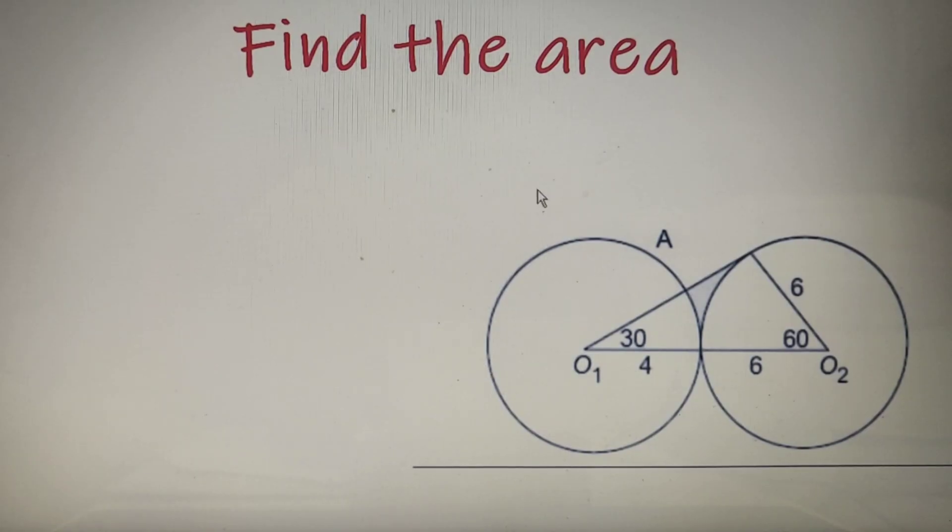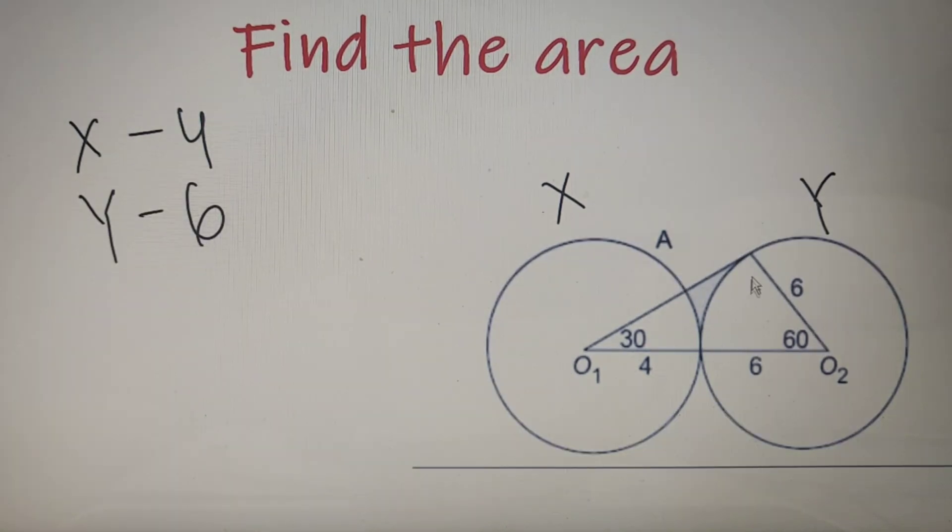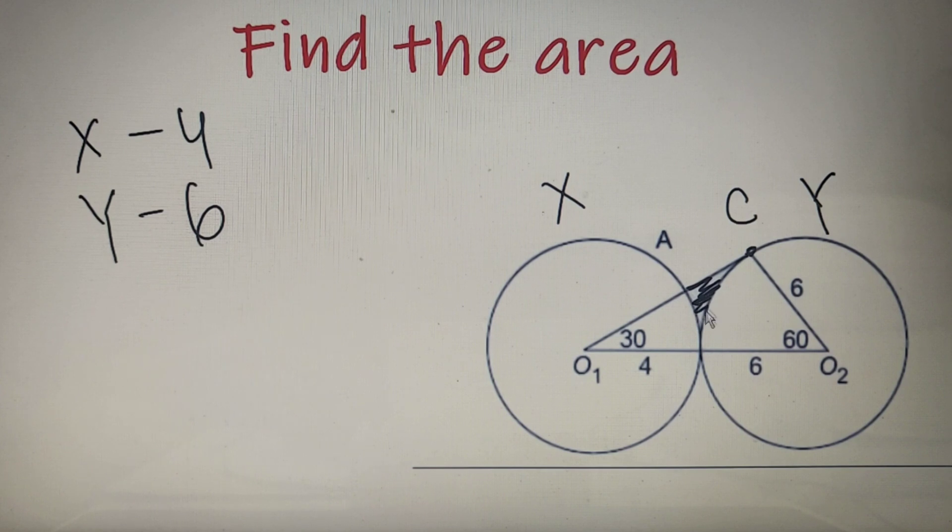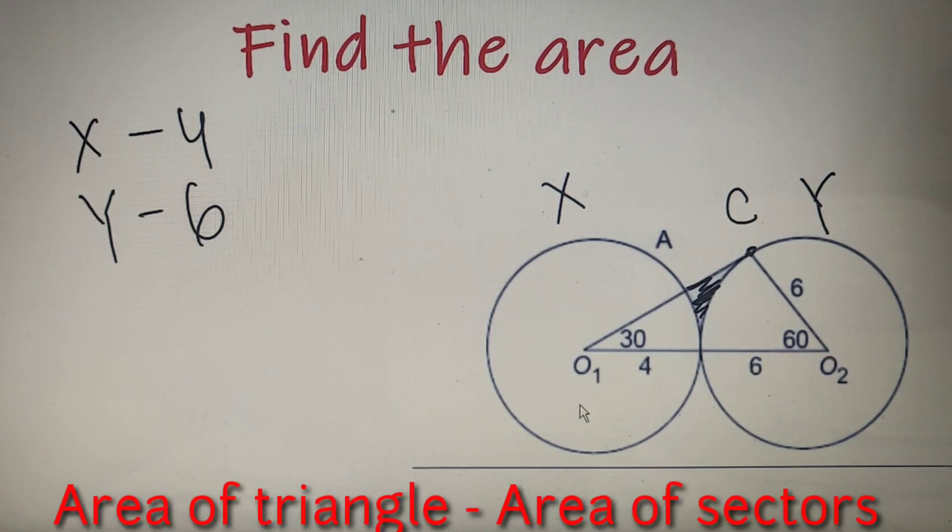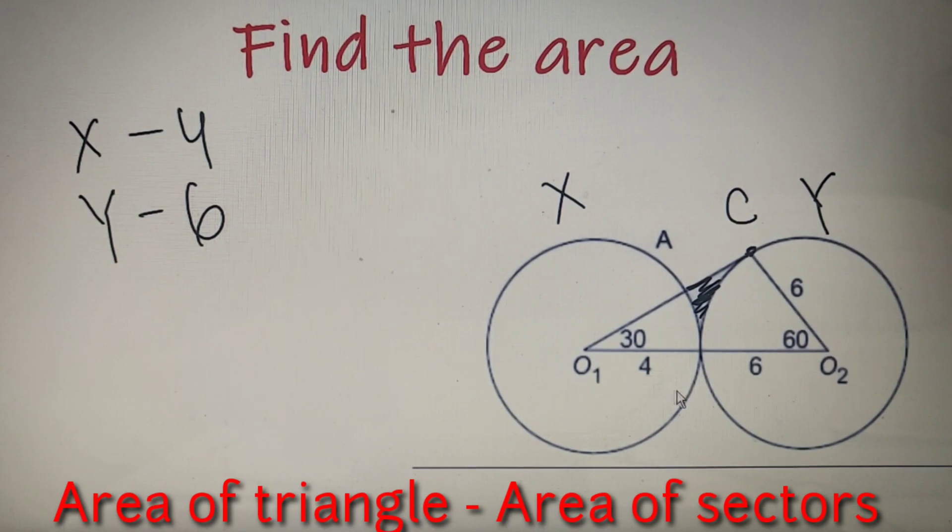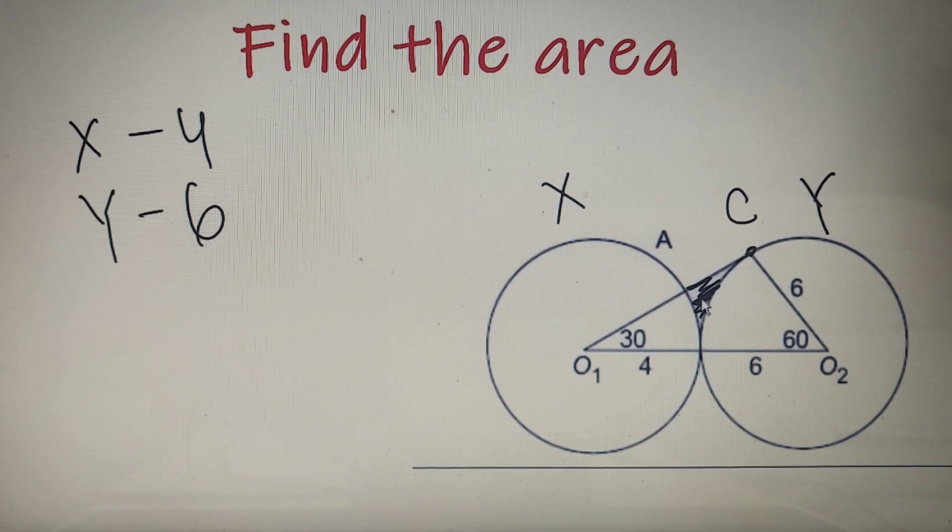If I name the first circle as X and the second circle as Y, then we are given that the radius of X is equal to 4 units and the radius of Y is equal to 6 units. For our convenience, let's name this point in circle Y as C. According to our question, we have to find the area of this shaded portion. What we can do is find the area of this complete triangle O1CO2 and then subtract the area of these two sectors, and we will get our required area.